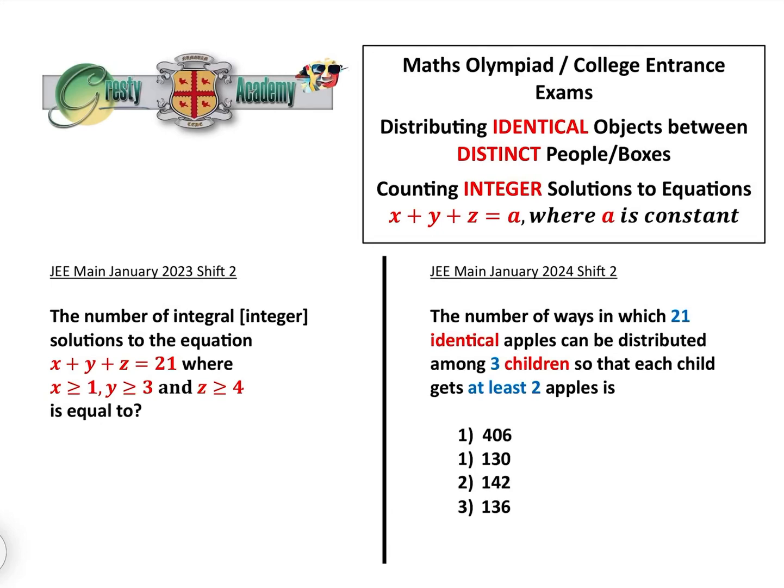There's nothing worse for a math student than finding that a question they thought they couldn't do was actually identical to a question they definitely could do, but they didn't recognize it. Here we have a perfect example of that. Regular Cressy Academy YouTube subscribers may recognize this as one we did the other day.